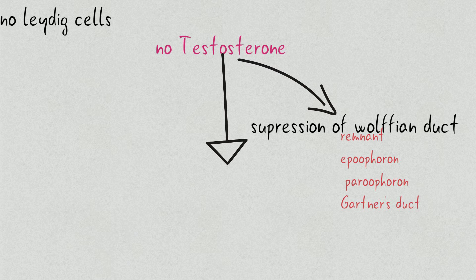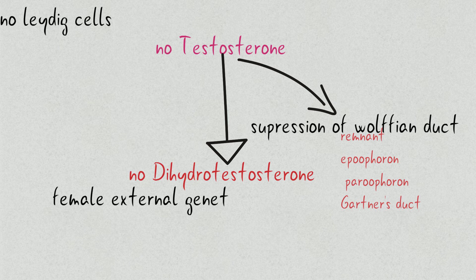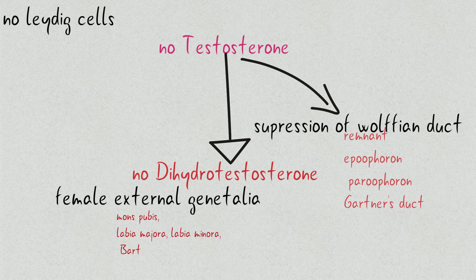During the 10th week, if there is no Testosterone, there is no formation of Dihydrotestosterone, which is responsible for the formation of external genitalia, which are Mons pubis, Labia majora, Labia minora, Bartholin glands and Clitoris.